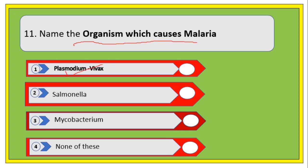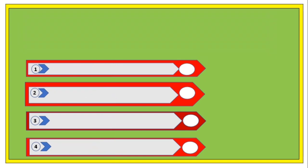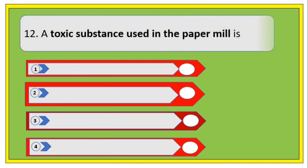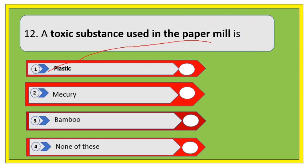Name the organism which causes malaria. Options are Plasmodium vivax, Salmonella, Mycobacteria, and none of these. The right answer is Plasmodium vivax.